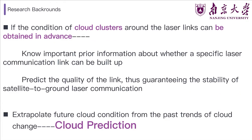In this case, if the condition of cloud clusters around the laser links can be obtained in advance, we will get important prior information about whether the construction of a specific laser communication link is suitable, and we will be able to predict the quality of the link, thus guaranteeing the stability of uninterrupted satellite-to-ground laser communication. Such a task of extrapolating future cloud conditions from past trends of cloud change can be termed as cloud prediction.